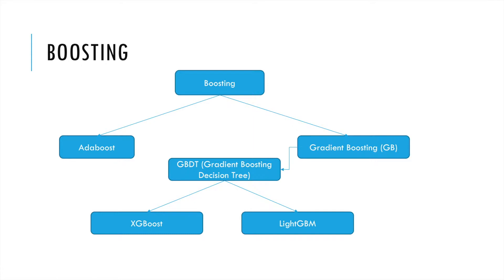For the boosting techniques, boosting can be divided into several algorithms. The first one is AdaBoost. The other one is gradient boosting, which gradually improves the model's accuracy rate. GBDT — that's gradient boosting decision tree — uses gradient boosting techniques with decision trees. From that, two new algorithms are generated: one is XGBoost, and the other is LightGBM.